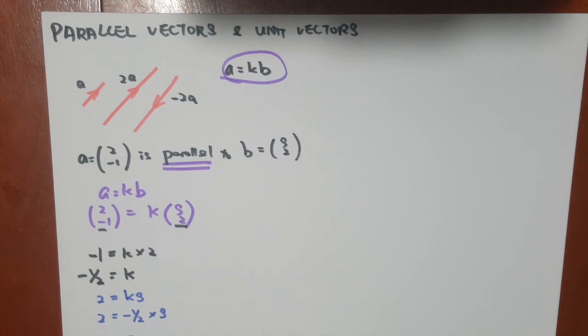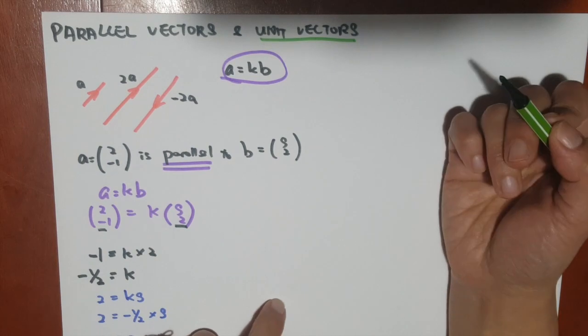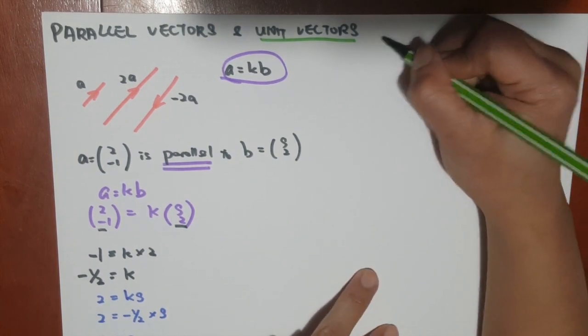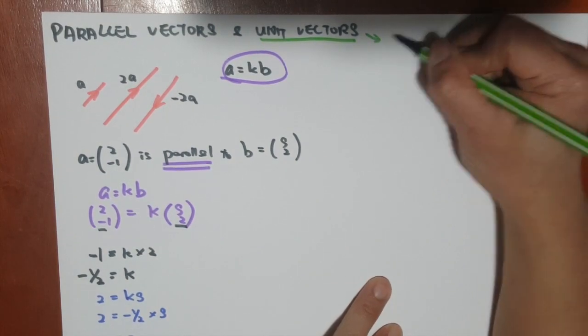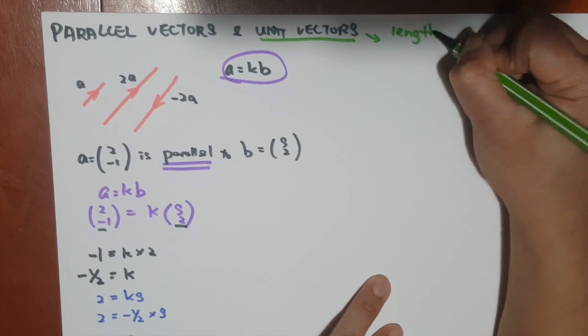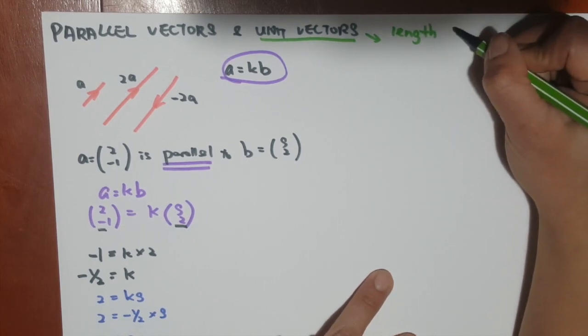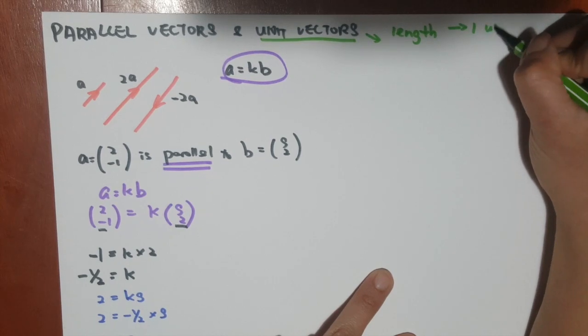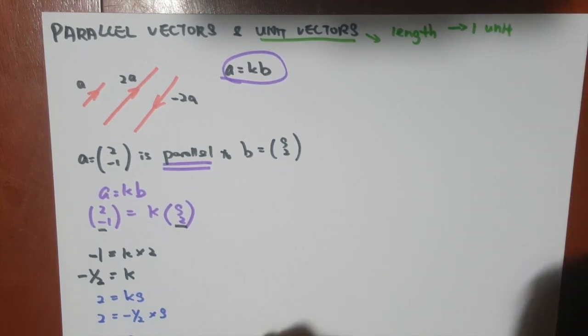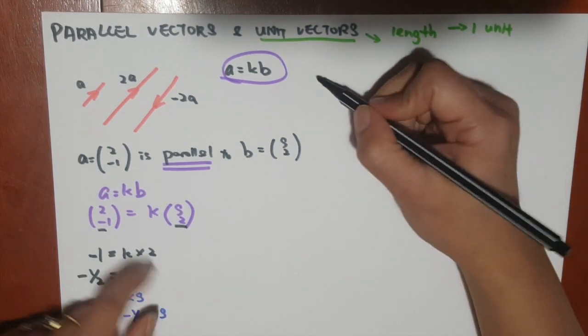Another thing that I want to discuss in this unit is unit vectors. So what is the meaning of unit vector? Unit vectors are vectors that only have a length of 1 unit. So the length of the vector is 1 unit.